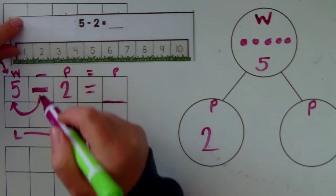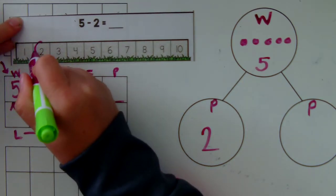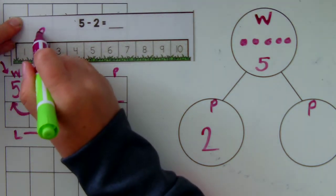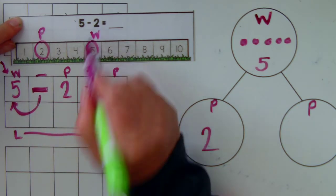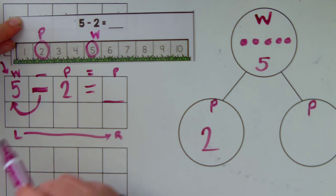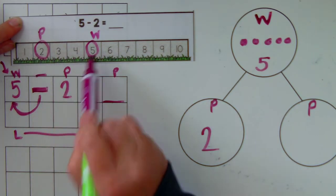On a number line, I can circle the part I know and the whole.